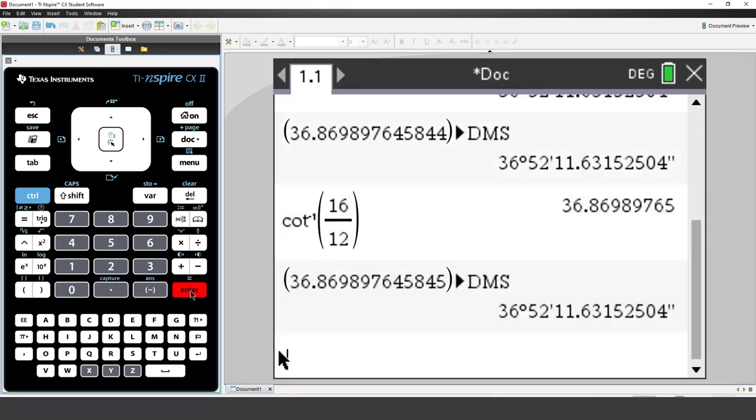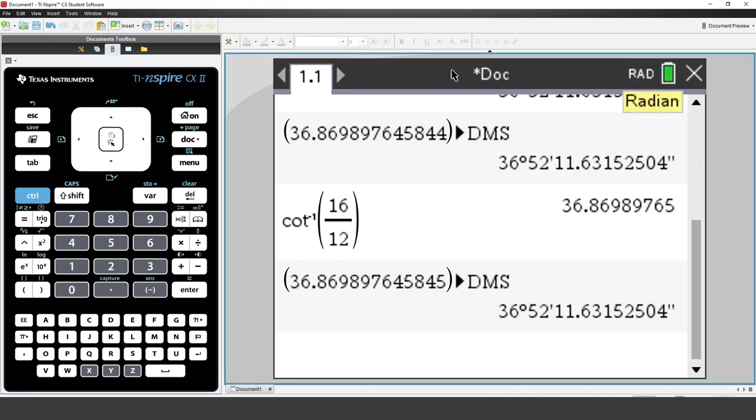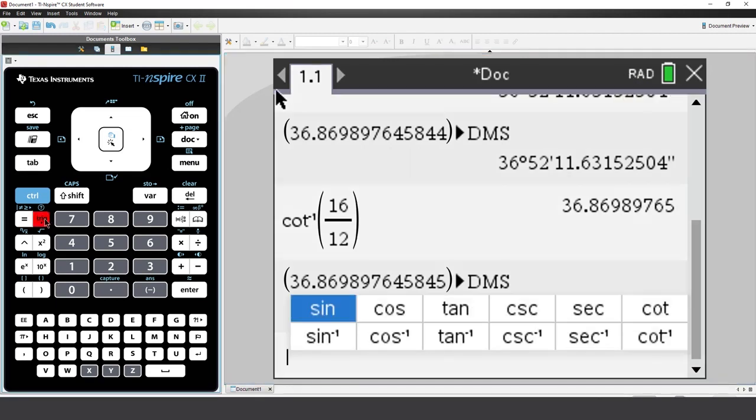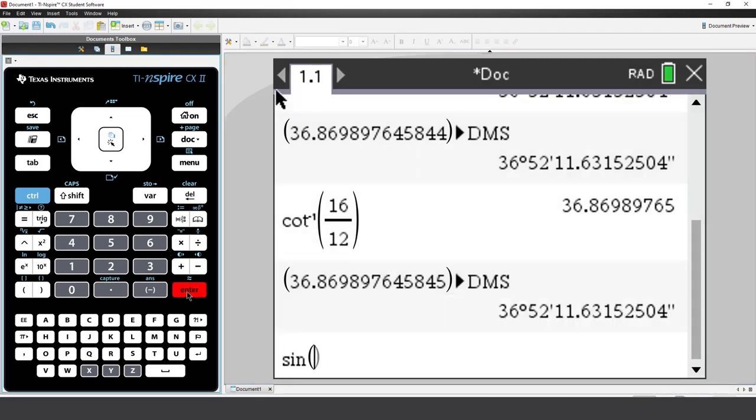Some senior level mathematics courses use radians more frequently than degrees. Suppose you have your current application set to radians, but one of your calculations needs to be in degrees. Let's calculate the sine of 30 degrees, this time with the calculator set to radians mode.